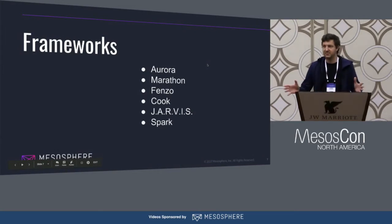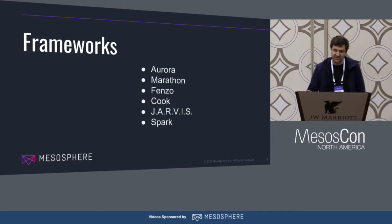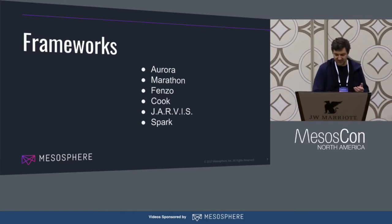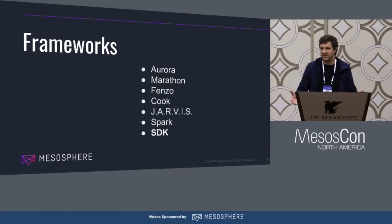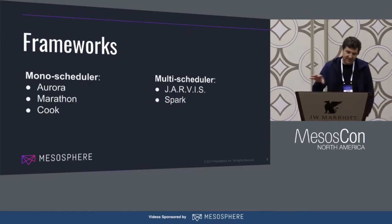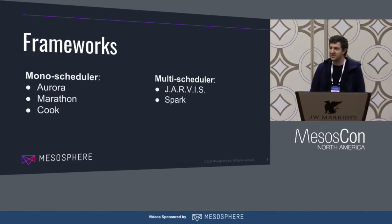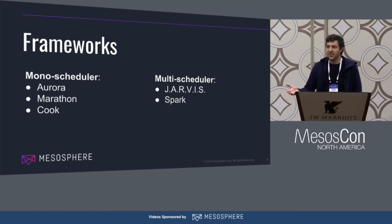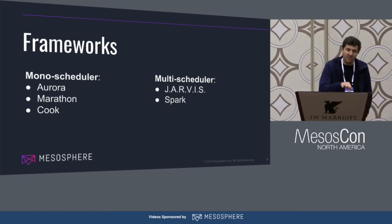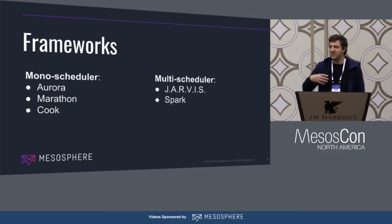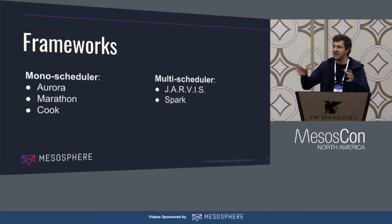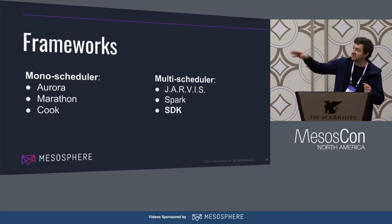Let's talk about the framework landscape in general. You've probably heard of all these frameworks — Aurora, Marathon, Fenzo, Cook, Jarvis, Spark. These are the big general-purpose frameworks in the world. And now we've got this other one — we call it DCOS Commons or the SDK. Generally speaking, there are two kinds of schedulers: monoschedulers or multischedulers. Aurora, Marathon, Cook consume all the offers in the cluster — they have a global view, they're a monoscheduler. Then you've got a multischeduler approach where you launch lots of different frameworks and they all cooperate and fight for resources. We're on the multischeduler end of the spectrum — the SDK is a factory for frameworks, for schedulers.